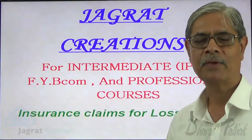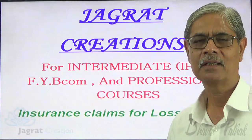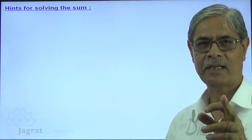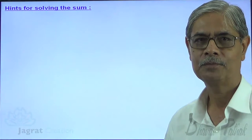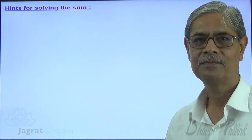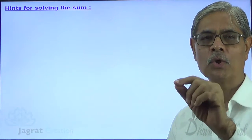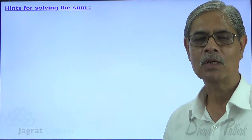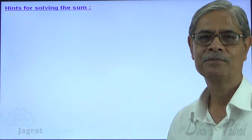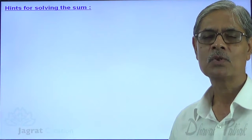I'm going to solve one sum before you. Before that, I'll give you hints for solving it — the theory discussion relevant to the sum. The chapter is insurance claim for loss of stock due to fire. We have taken an insurance policy for loss of stock due to fire. Fire has occurred and stock is destroyed. We don't know the exact amount of stock destroyed because we have not counted it — stock existed just before the moment fire occurred. So we are not knowing the exact amount of stock destroyed by fire, and we have to estimate it.